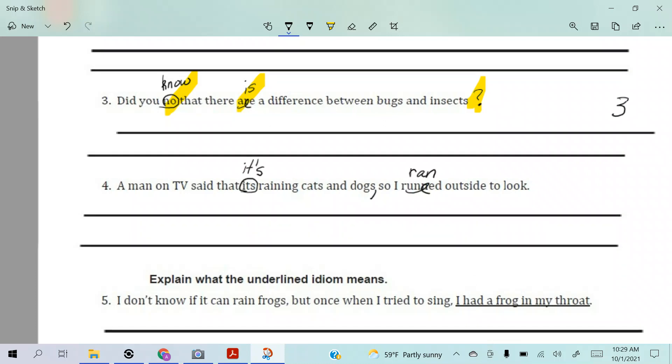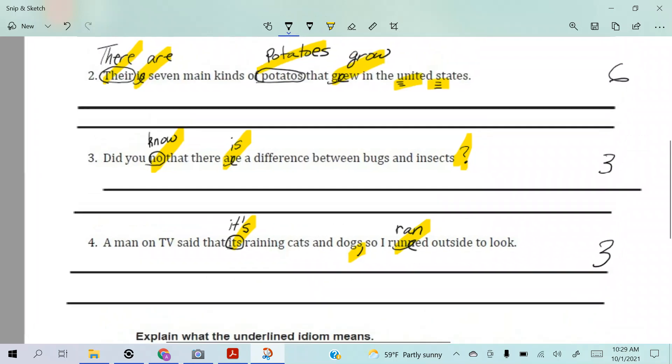Ran outside to take a look. A man on TV said it's raining cats and dogs so I ran outside to look. Yeah, there it is - three corrections for that. Three.